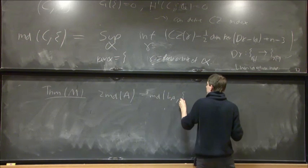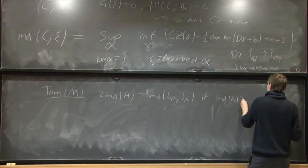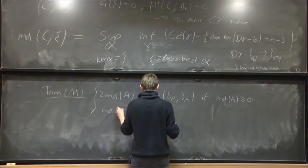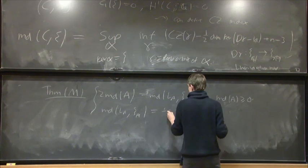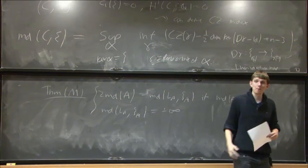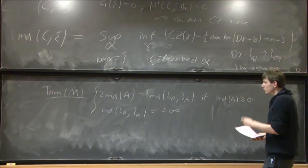The main theorem: twice the minimal discrepancy of an isolated singularity A equals the minimal discrepancy of its link LA, provided the minimal discrepancy of A is ≥ 0. Otherwise, the minimal discrepancy of LA is −∞.